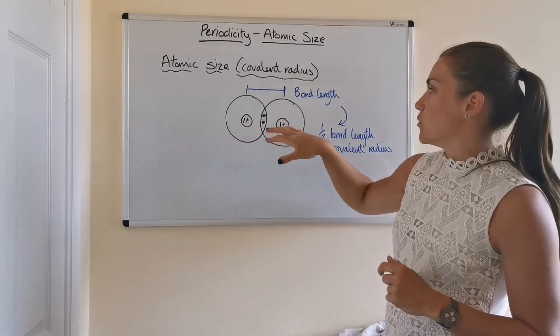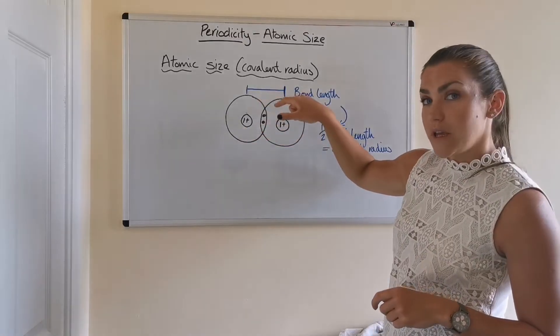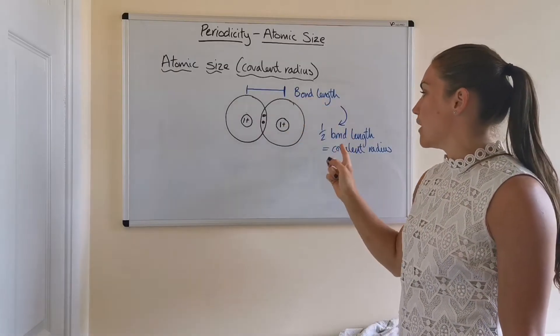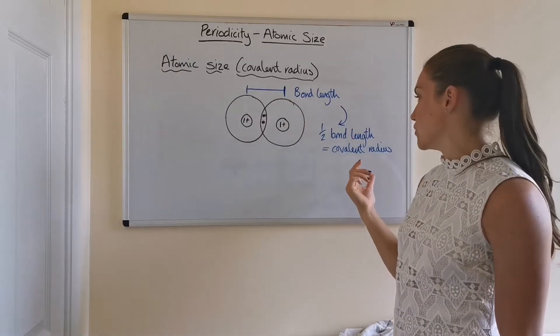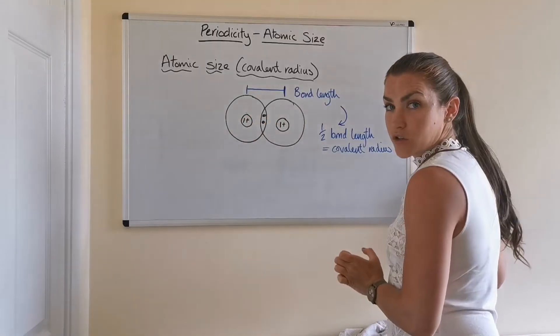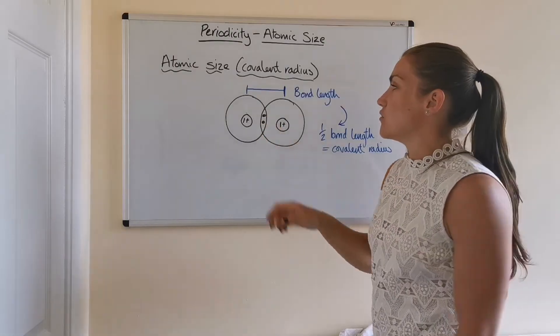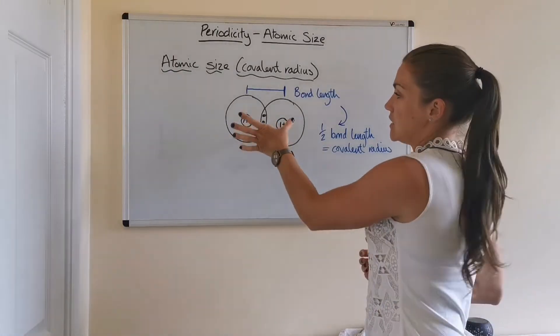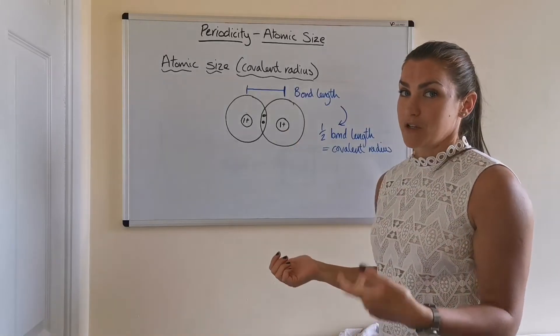Now we can measure bond length, covalent bond length. So that gets measured and then if you half that bond length that gives you the covalent radius. So basically half the distance between the two nuclei. We can use covalent radius as a gauge for how big the atom actually is because the bigger the covalent radius is, the bigger the atom must be.